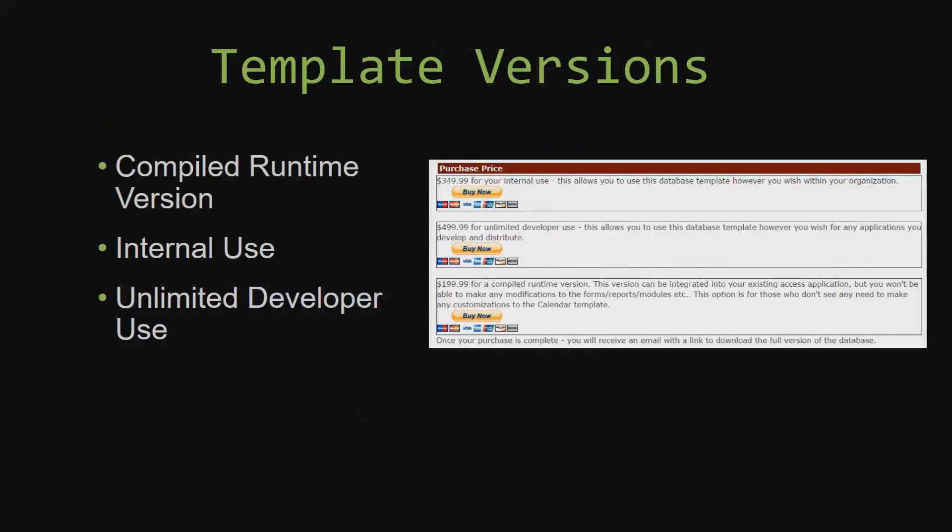With most of our templates, there are three different versions you can purchase: a compiled runtime version, one for internal use, and one for unlimited developer use. Our compiled runtime version is a run-as-is version using the free Access runtime from Microsoft, without needing the paid full version of Microsoft Access. It can be integrated into your existing Access application, but you would not be able to make modifications to the forms, reports, or modules. Our internal use version allows you to use or modify the databases however you wish within your organization. Our unlimited developer use version allows you to use the database template however you wish for any applications you develop and distribute as part of a database you create.